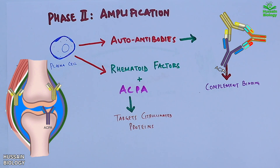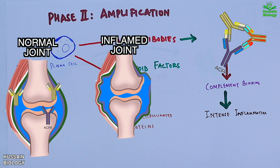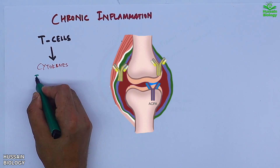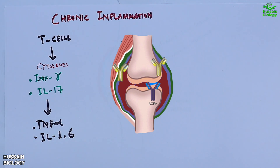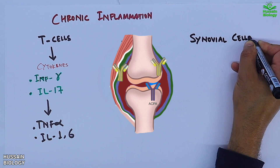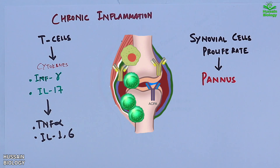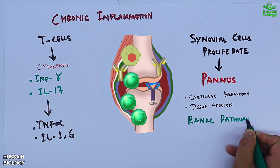The chronic phase begins with T cells secreting cytokines like IFN-gamma and IL-17, which further stimulate secretion of TNF-alpha, IL-1, and IL-6. Under these conditions, the synovial cells proliferate as shown in the diagram, leading to pannus formation — abnormal growth of tissue — and angiogenesis also occurs.